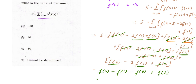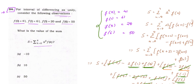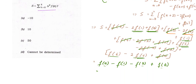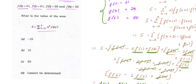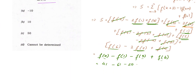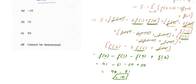The remaining terms give: f(0) with coefficient +1, f(1) with coefficient -1, f(5) with coefficient -1, and f(6) with coefficient +1. Substituting the given values: 41 - 61 - 20 + 50 = 10. The answer to this summation is 10, which corresponds to option B. Hence option B is the correct answer.